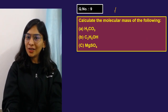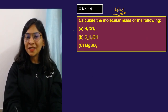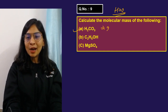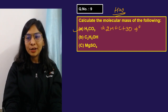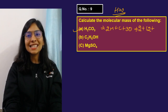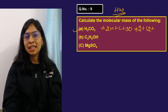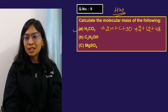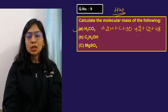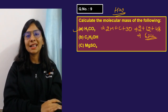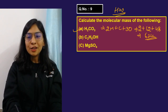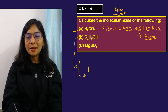Let me solve carbonic acid (H₂CO₃) as an example: 2 hydrogen = 2u, 1 carbon = 12u, 3 oxygen = 3 × 16 = 48u. Total: 2 + 12 + 48 = 62u. That is the mass of a carbonic acid molecule.